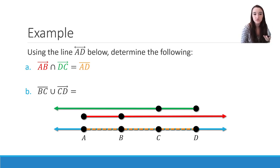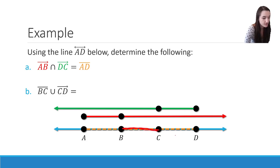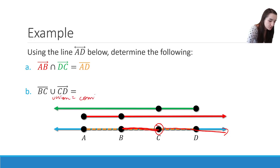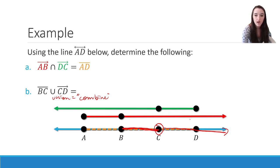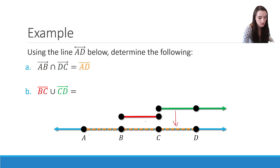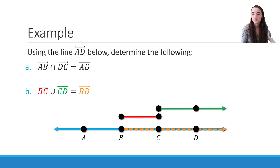For the union of segment BC with ray CD: segment BC is just this part of our line, while ray CD starts at C, heads towards D, and keeps going. Remember that the union means combine everything. When we combine segment BC with ray CD, we lay them on top of each other on our line, and we're left with starting at B, heading towards C, and going off infinitely. So we can call this ray BC or ray BD — either is an appropriate name for the union.